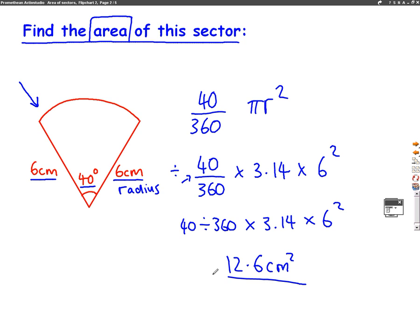So let's recap. A sector is part of a circle. We need to know what fraction of the circle we have. That's where the 40 out of 360 came from. We have 40 degrees and the whole circle is 360 degrees. And because it's area, we use the formula pi r squared. All we have to do is plug in the numbers.